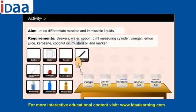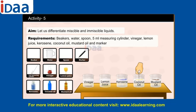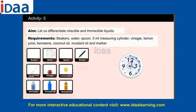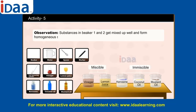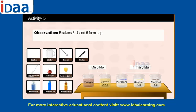Stir each beaker for 5 minutes. Let the beakers remain idle for 10 minutes. Observation: Substances in beakers 1 and 2 mix well and form a homogeneous solution — these liquids are miscible. Beakers 3, 4, and 5 form separate layers and therefore are immiscible.